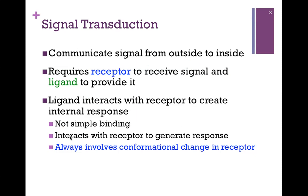In each case, it requires a receptor in order to receive the signal and a ligand that provides that signal. They will interact in a very specific way and that's going to create an internal response. It's not a simple binding like hemoglobin binding oxygen. There's a more specific interaction with ligand and receptor that generates a response, and it always involves a conformational change in the receptor that allows it to interact with other proteins or enzymes.